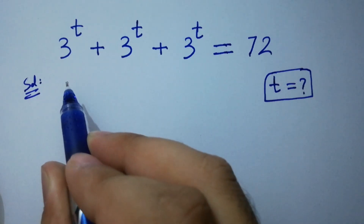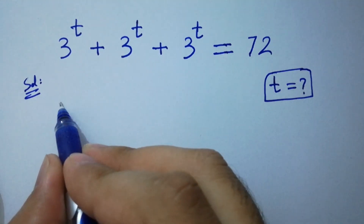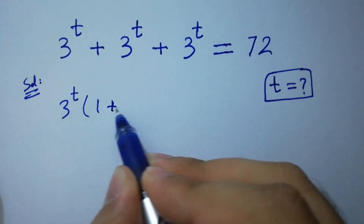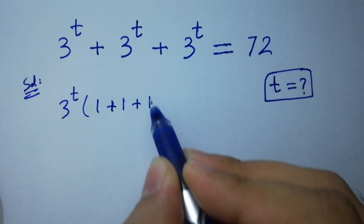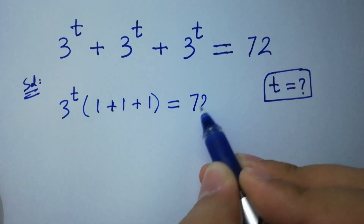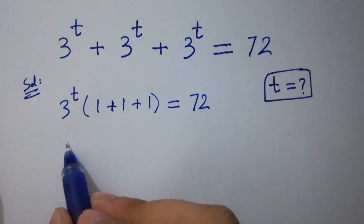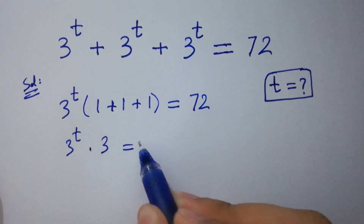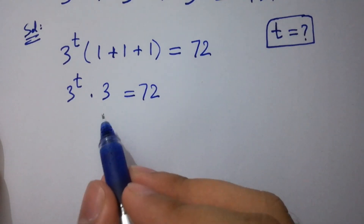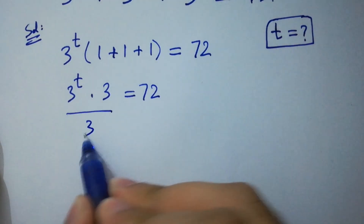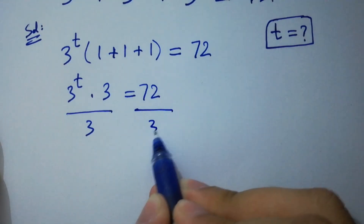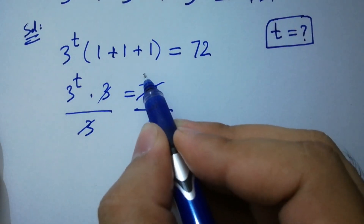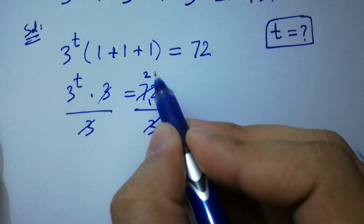On the left side, 3 to the power t can be common. We have 1 plus 1 plus 1 equal to 72 as it is. So 3 to the power t times 3 equals 72. To cancel this 3, divide by 3 on both sides. 3 and 3 cancel, and here we have 72 divided by 3: 3 times 2 is 6, remainder 1, 3 times 4 is 12, giving 24.